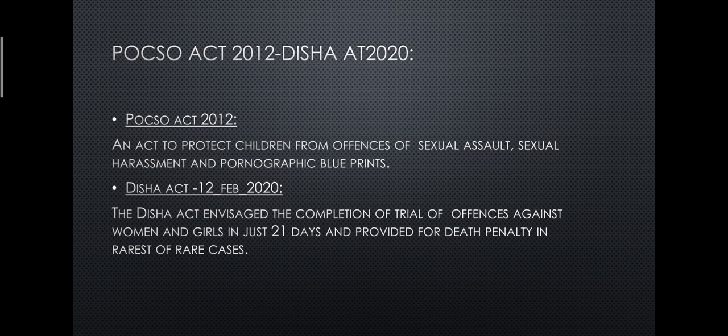The third preventive measure is awareness about the POCSO Act 2012 and the DISHA Act 2020. The POCSO Act 2012 is an act to protect children from offenses of sexual assault, sexual harassment, and pornographic material. The DISHA Act, enacted on February 12, 2020, envisages the completion of trial of offenses against women and girls in just 21 days — seven days for investigation and 14 days for trial — and provides for the death penalty in rarest of rare cases.